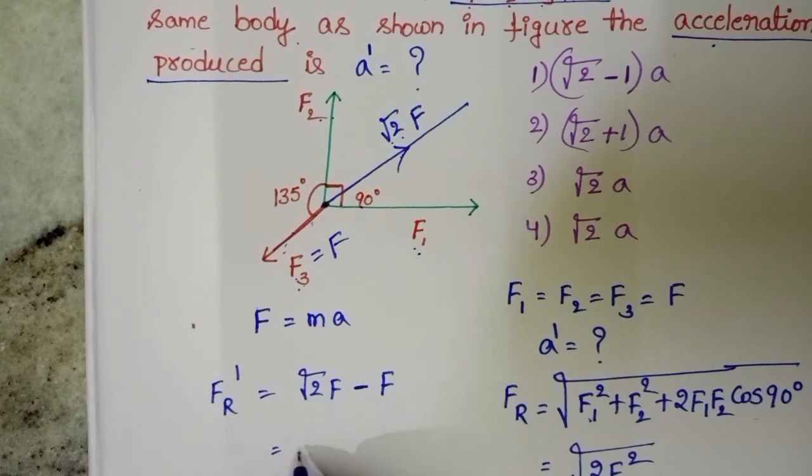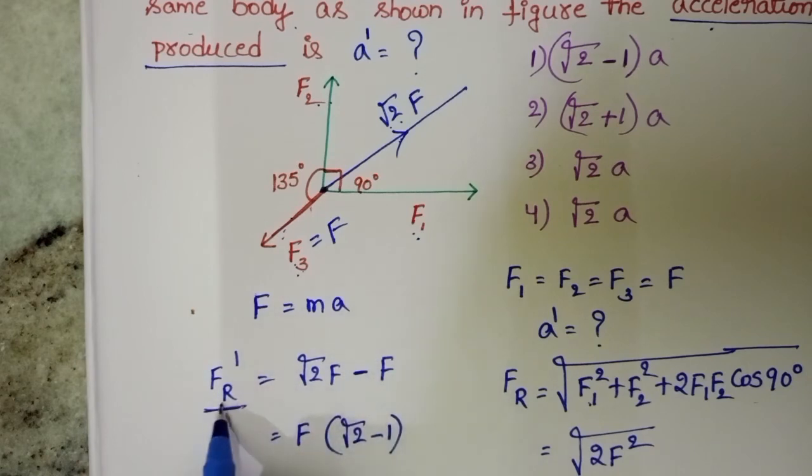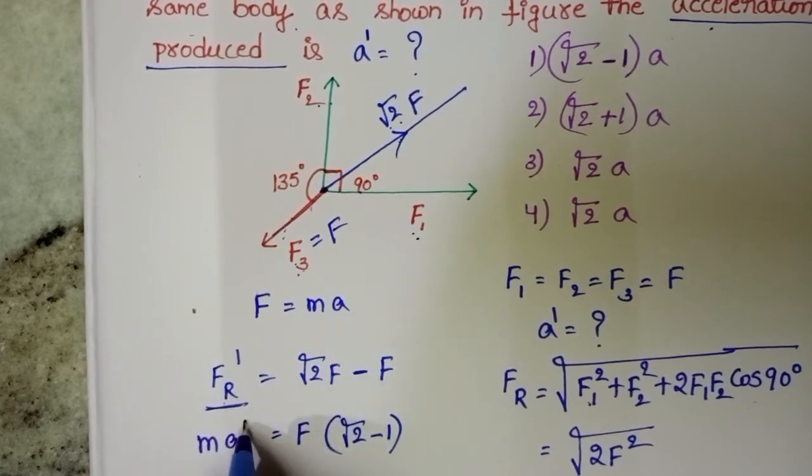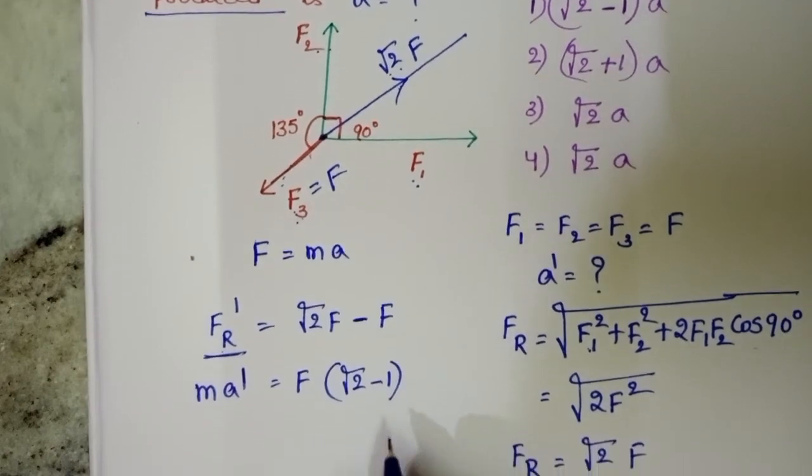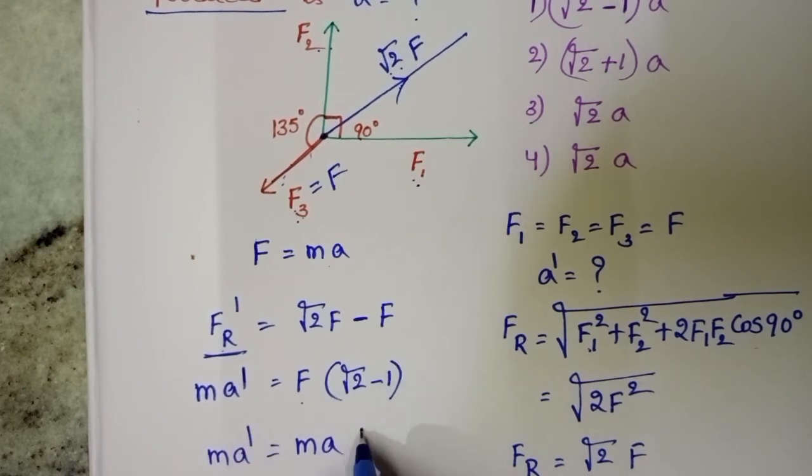Take F common: root 2 minus 1. In place of F dash, write mass into acceleration A dash. And we know F equals MA. Substitute here MA, and LHS side MA dash. Here into root 2 minus 1.